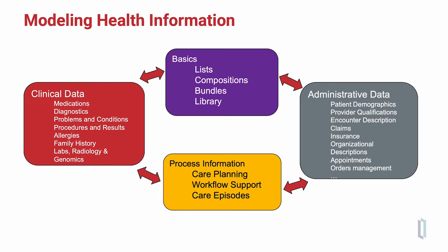The category of clinical data is what we usually think of as data that is exchanged between systems. These include the FHIR medication, diagnostics, problem and condition resources, procedures and results, allergies, family history, lab observations, radiology, and genomic observations. Complementing these are administrative data represented by FHIR resources that allow representation of patient demographics, provider qualifications, descriptions of encounters, payment concepts like claims and insurance coverage, organizational identities, and appointments. All of these are used together with FHIR resources involved in the processes or workflows of healthcare, including care planning and care episodes.